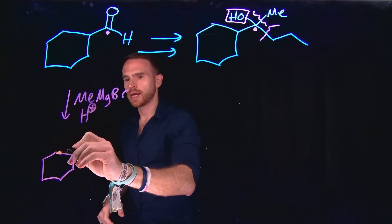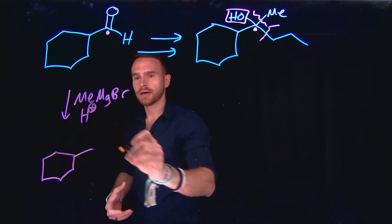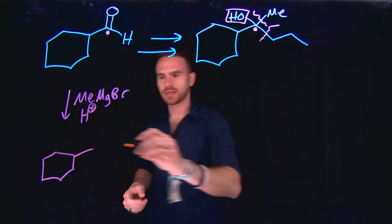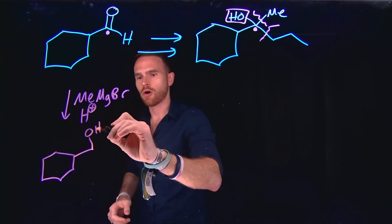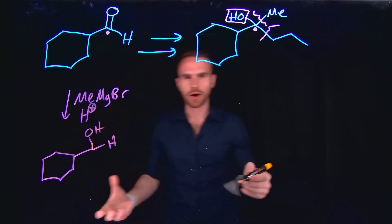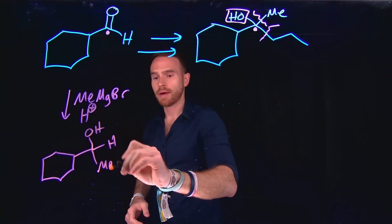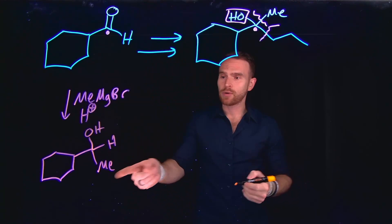Now importantly, when you add a Grignard reagent to an aldehyde, if you follow that with acidic workup, this generates an alcohol. And remember, we still have our hydrogen there, and then we also have our brand new methyl group, which we've installed.